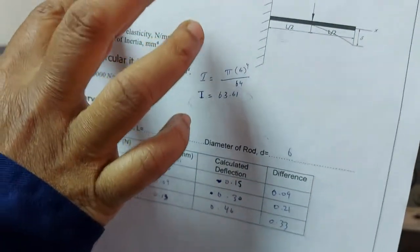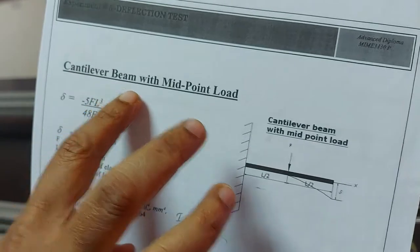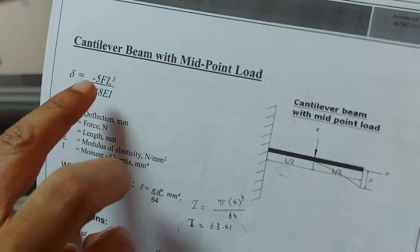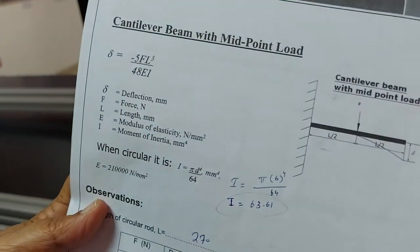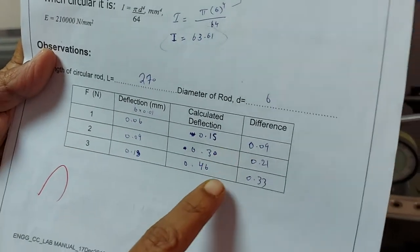After we find out this, you can substitute here in this rule, you can find out the deflection for the cantilever beam with midpoint load. In this rule you have to substitute and you have to find out the deflection for load number 1, for load number 2, for load number 3.